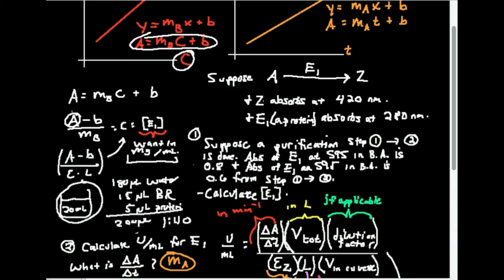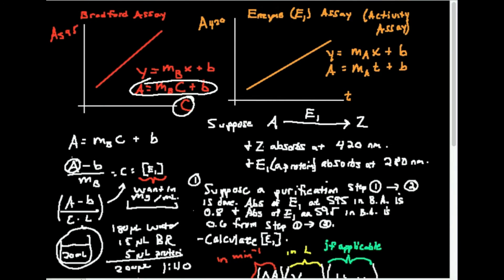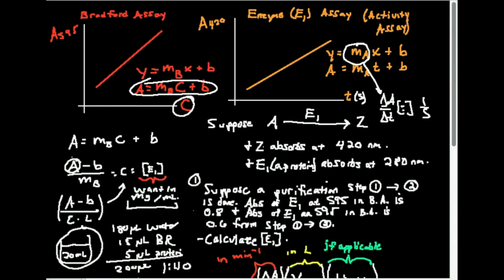Now let's calculate the activity per mL — that's a good second step. This is your formula right here. In general you can have an extra dilution factor, but I'm going to do an example where it's really not necessary. So I'm going to focus on delta A over delta T and V total on the top, and the three things on the bottom. Delta A over delta T is the slope of your enzyme activity assay — that's what we talked about in the last video. When you do your assay and get y = mx + b, whatever that m is, that is your delta A over delta T. That is essentially the activity in units of per second, because the time on the x-axis is in seconds.